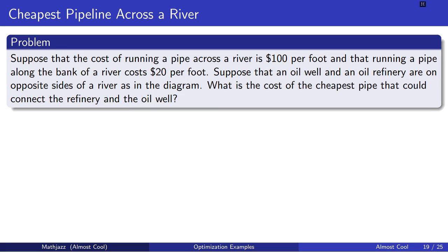The statement of the problem is: suppose that the cost of running a pipe across a river is $100 per foot and that running a pipe along the bank of the river costs $20 per foot. Suppose that an oil well and an oil refinery are on opposite sides of a river as in the diagram. What is the cost of the cheapest pipe that could connect the refinery and the oil well?